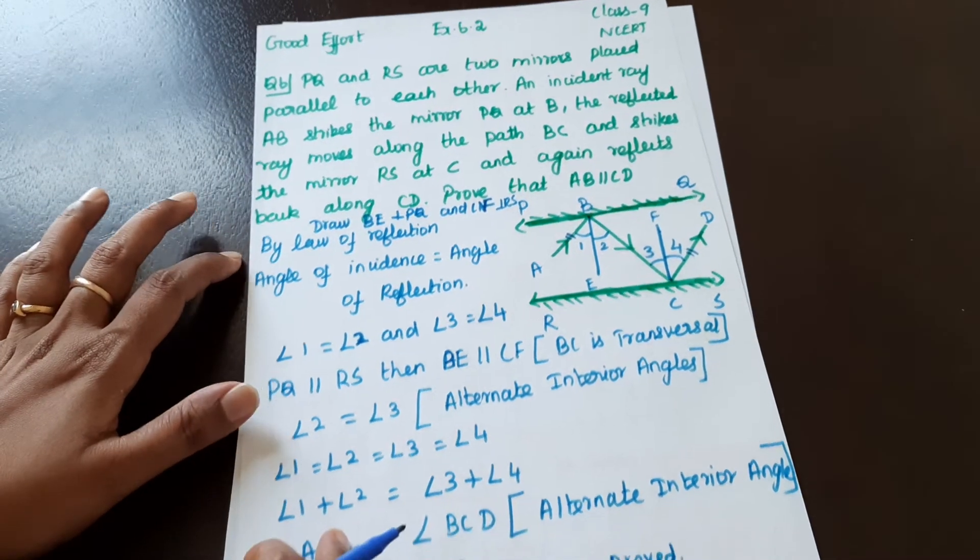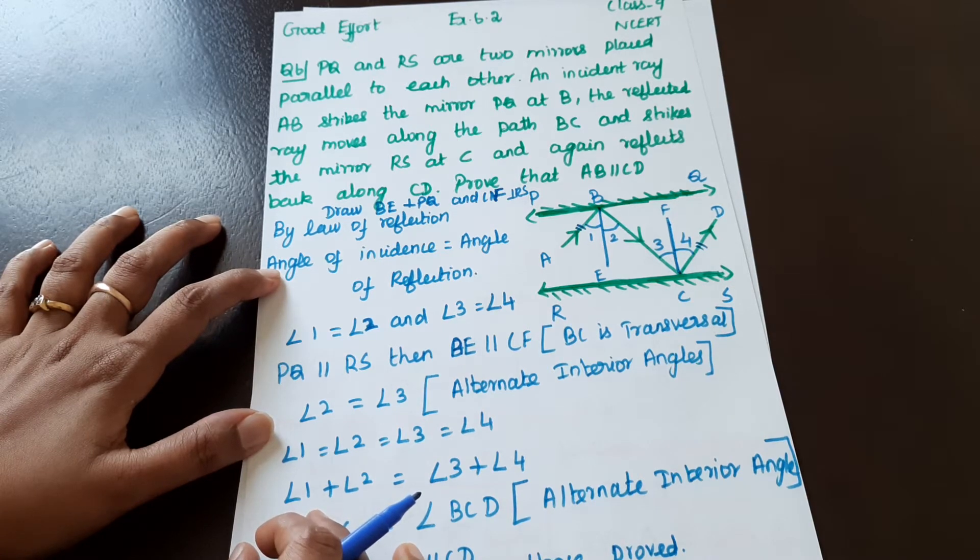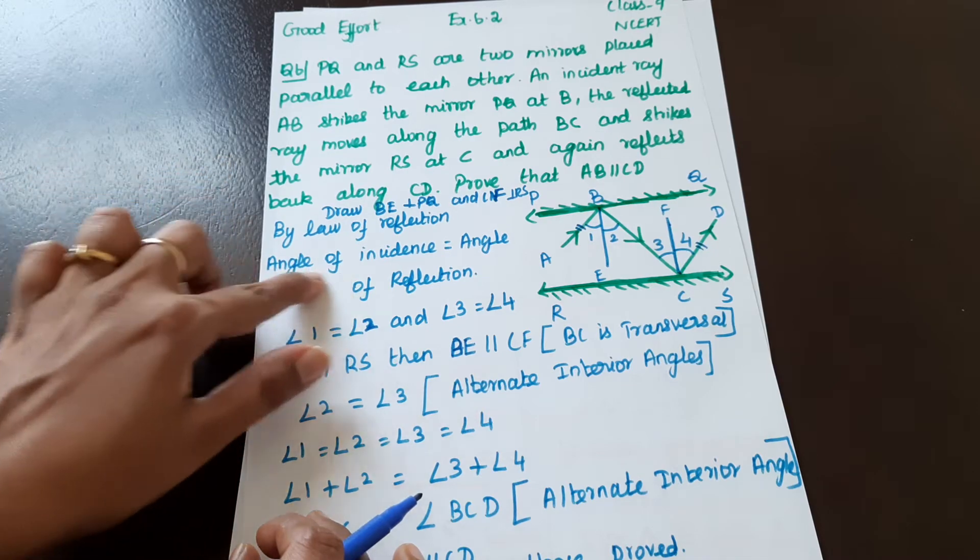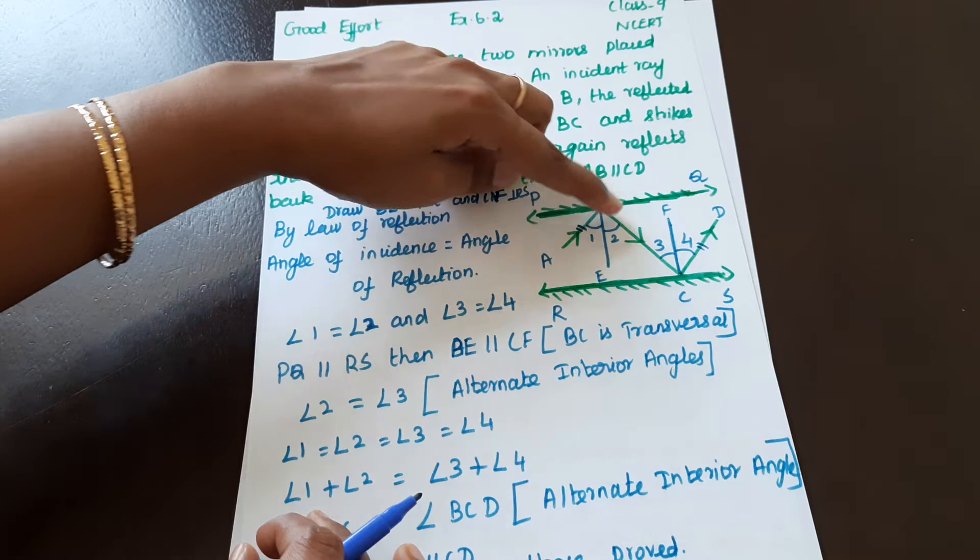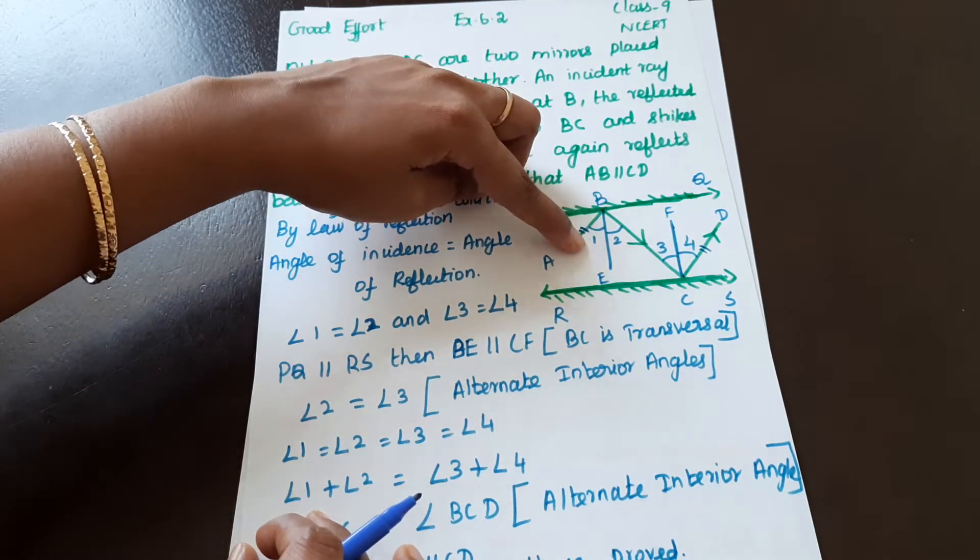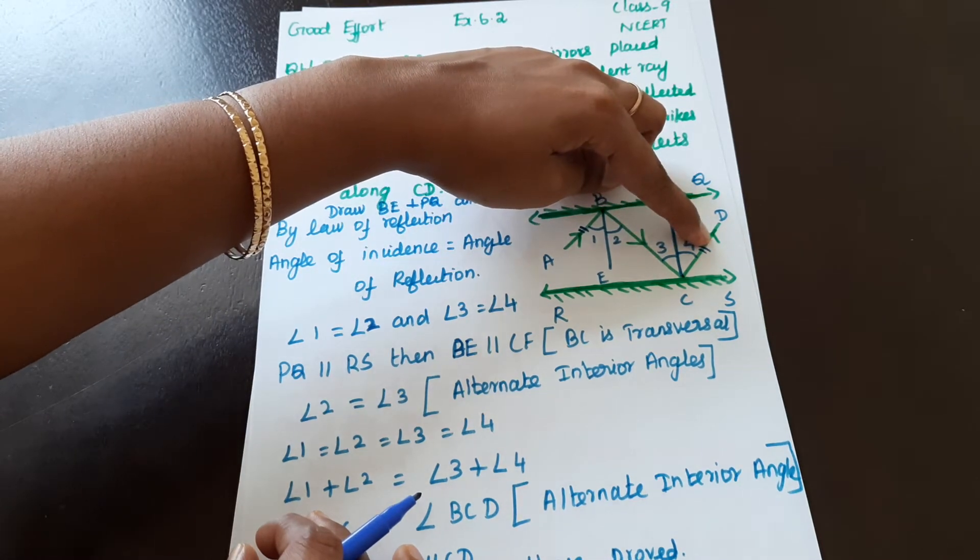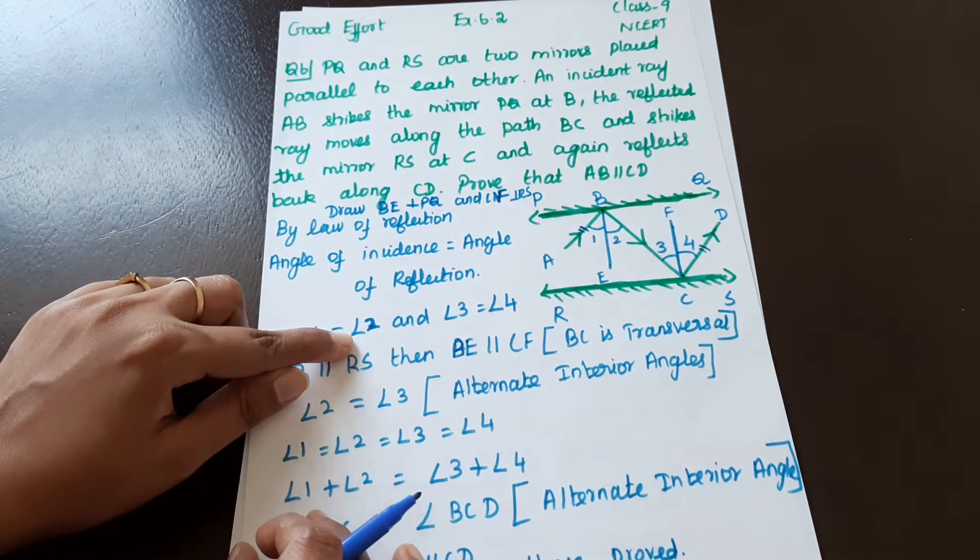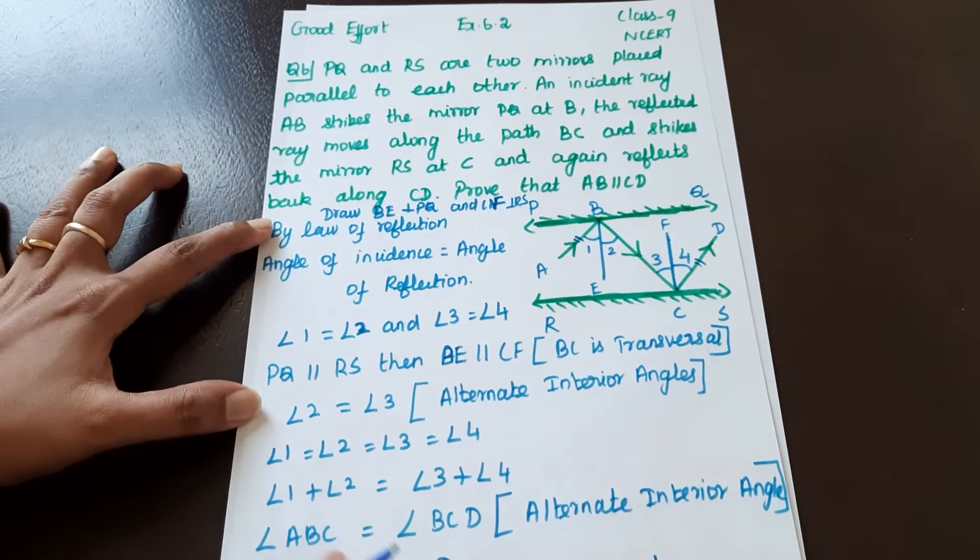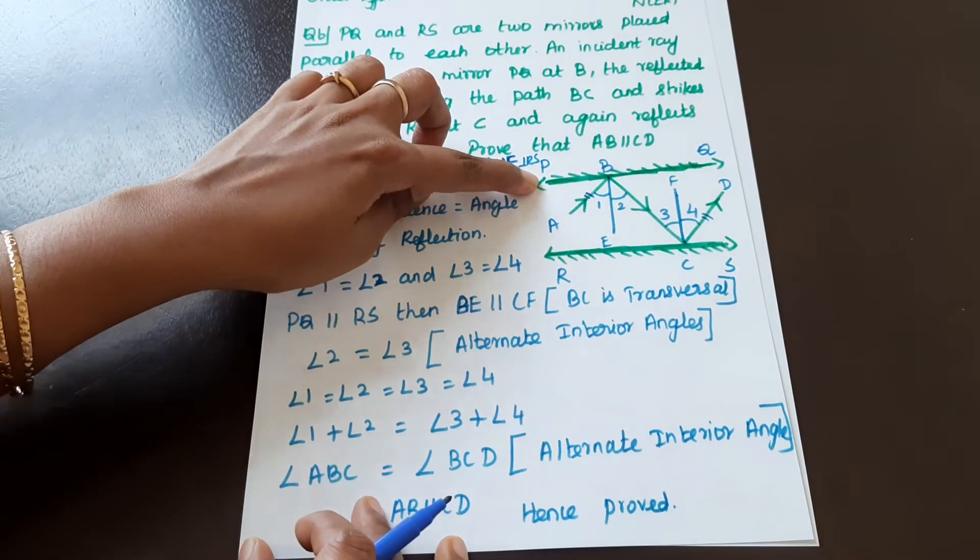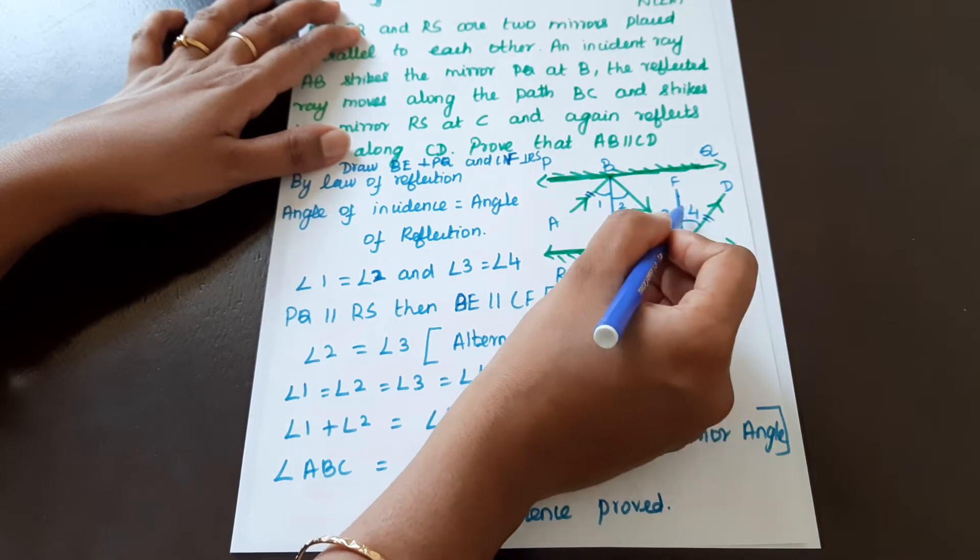So by law of reflection, angle of incidence is equal to angle of reflection. This is the incident ray and this is the reflection ray. So angle 1 is equal to angle 2, and angle 3 is equal to angle 4.